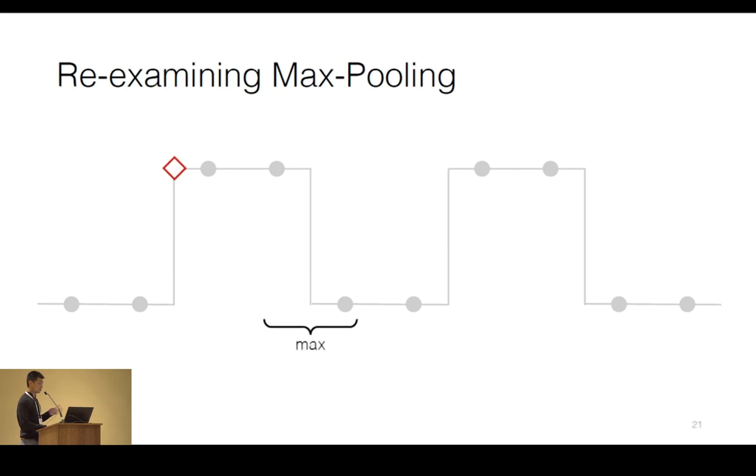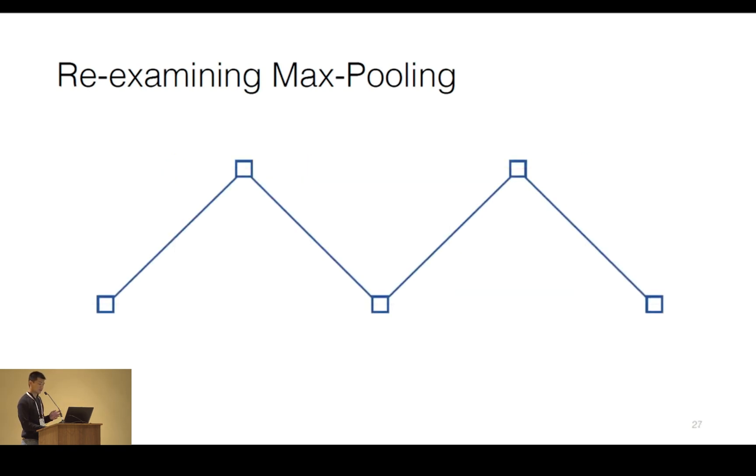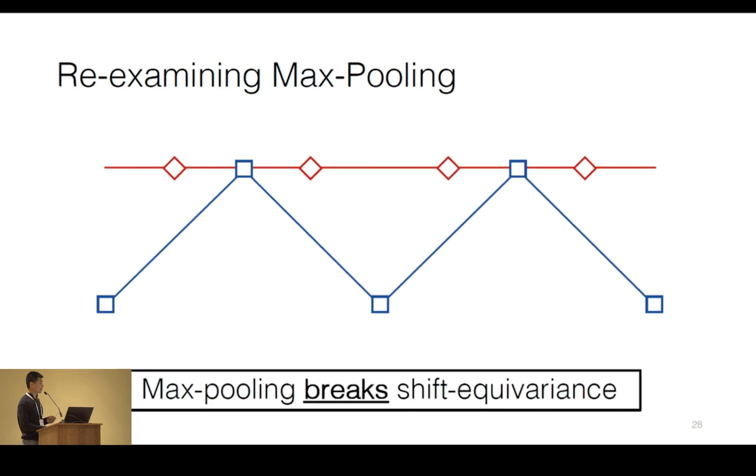the max of 1 and 0, which is 1, and so on and so forth. And we get this output. Now, this answer is very different than this answer, and they were produced simply by shifting the input signal by a single index. What we've done here is we've broken shift-equivariance.